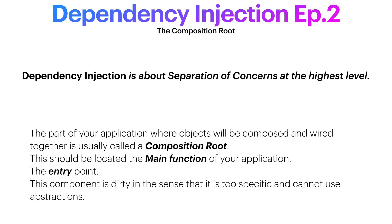Every time we rely on an abstraction, we delegate the concrete creation of the object to someone else. And if we keep doing that, we'll eventually bump into the composition root. This module has no options of being generic anymore. It cannot go back to someone else and say, I need a concrete implementation of something. There is no one else. This is why it resides in the entry point of your application.